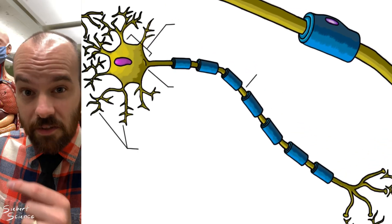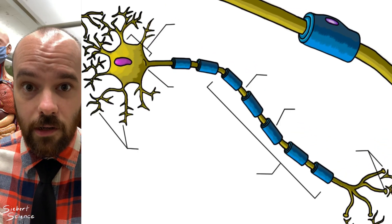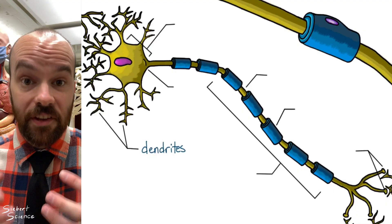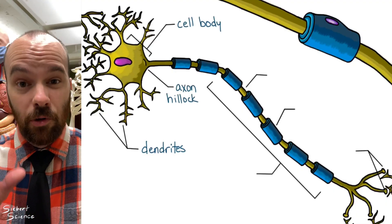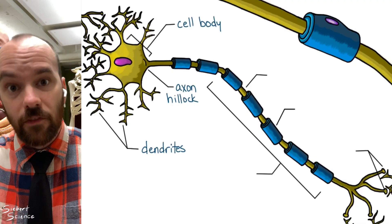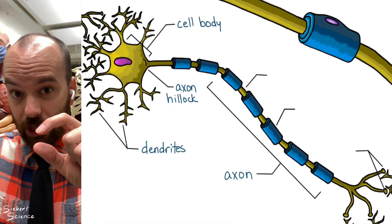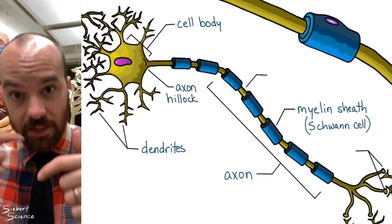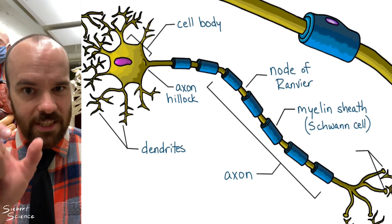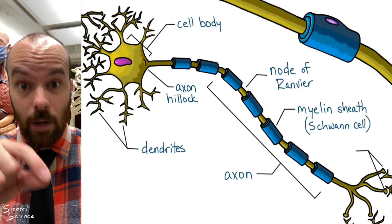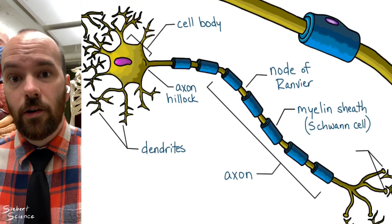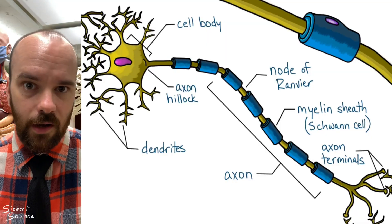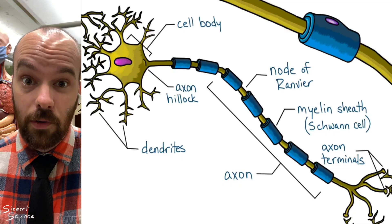Pause the video and see if you can identify each structure and what it does. Dendrites bring information in. The cell body processes information. The axon hillock is where an action potential starts if the neuron sends one. The axon conducts the action potential to other neurons. Myelin sheaths or Schwann cells insulate the neuron and speed up action potentials. The nodes of Ranvier are the spaces between each myelin sheath that allow the signal to jump from node to node. At the distal end are the axon terminals, which connect to other neurons via synapses.